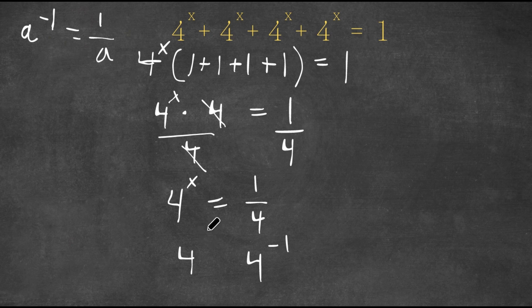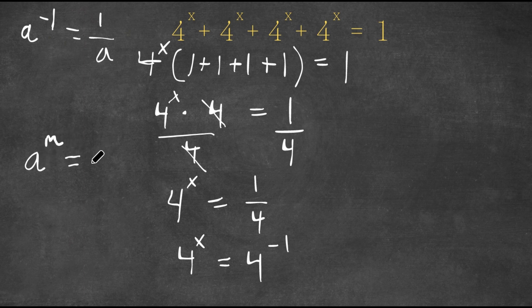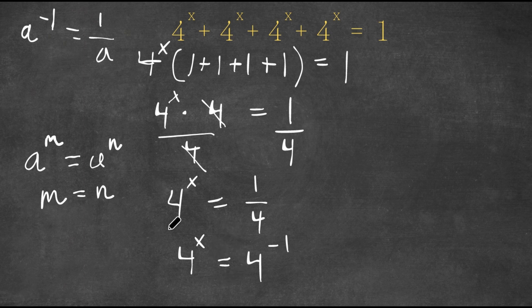Now I have 4^x = 4^(-1). If I have a^m = a^n, then m = n. In this case, m is x and n is -1.